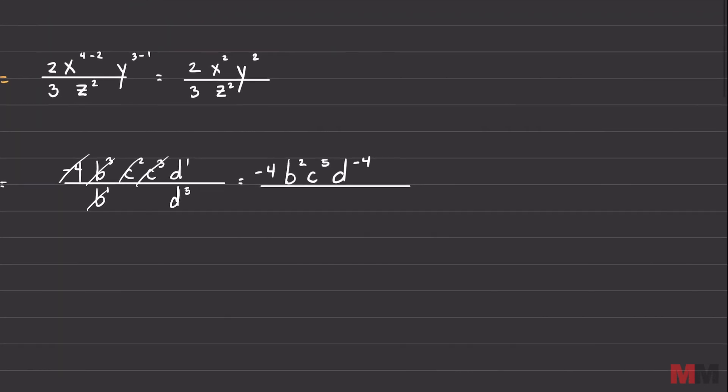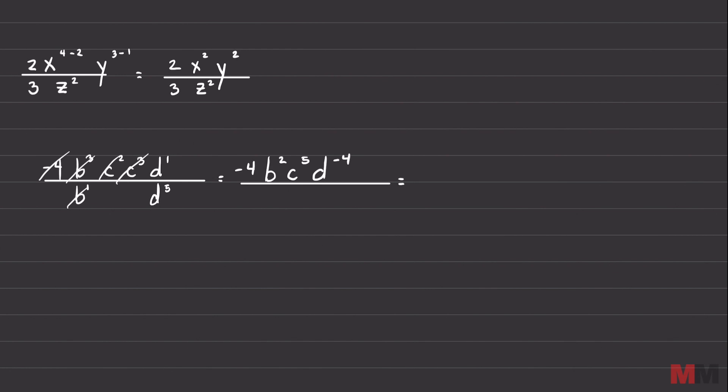So now assess what you got. And you can keep going. The negative 4 I'm not touching. And the only thing to fix right here is that negative exponent. So all you have to do with this is flip it to the bottom, d to the fourth power.